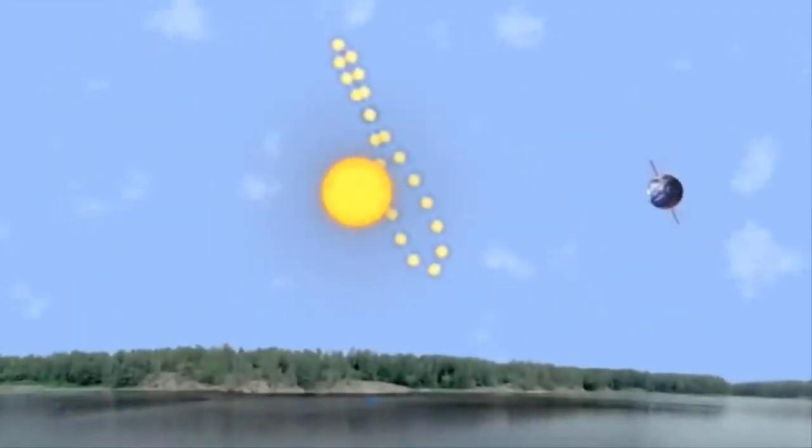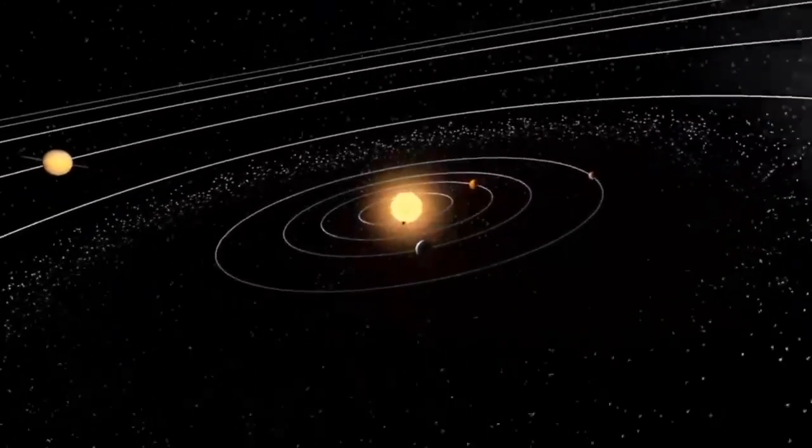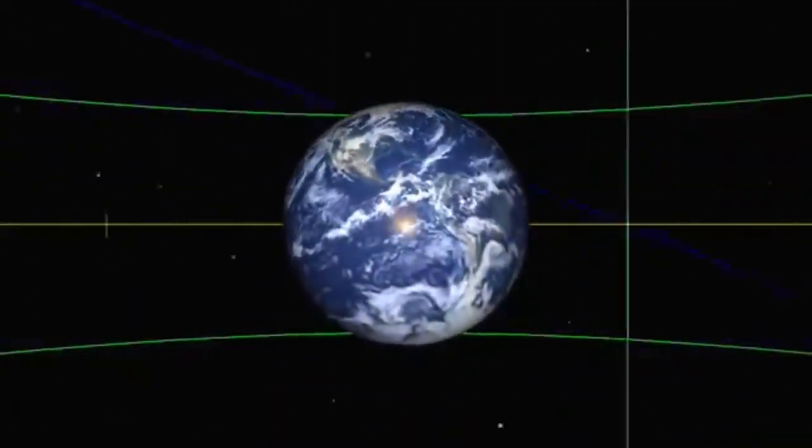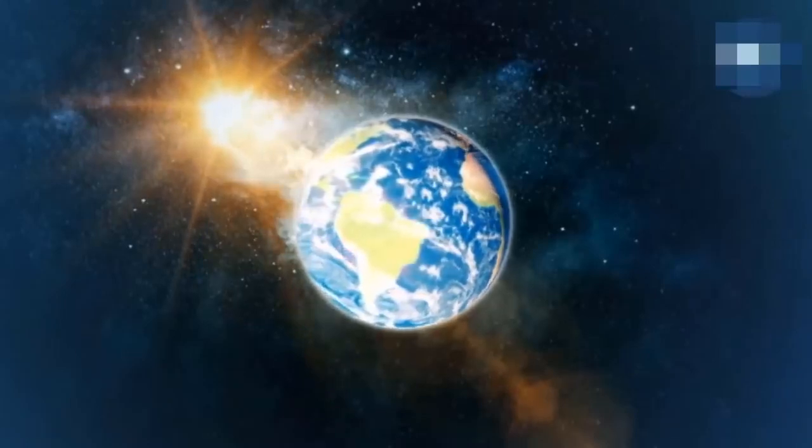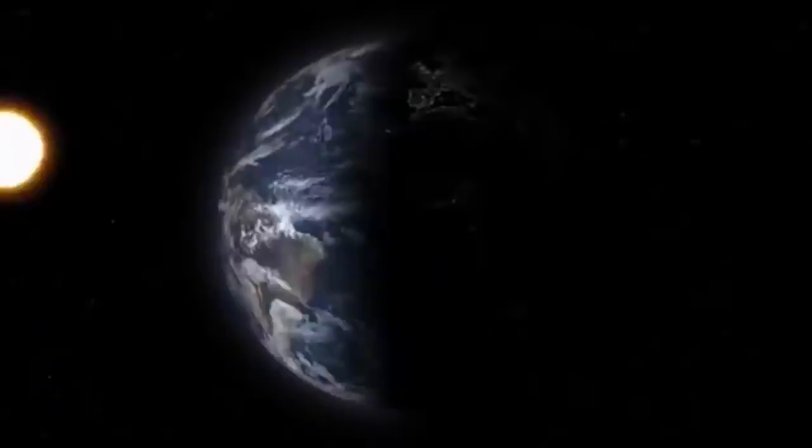First, let's establish why the Earth spins. Earth spins because of the way it was formed. Our solar system formed about 4.6 billion years ago when a huge cloud of gas and dust started to collapse under its own gravity. As the cloud collapsed, it started to spin.